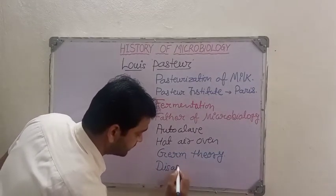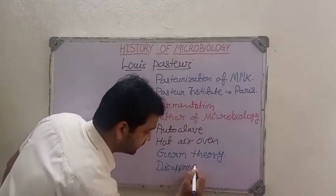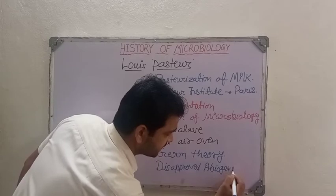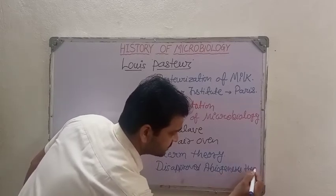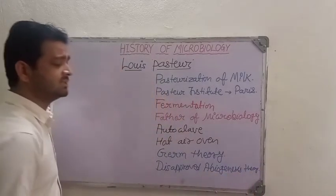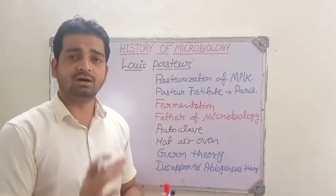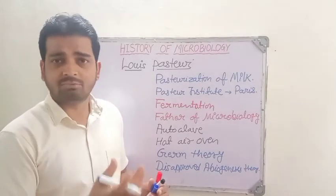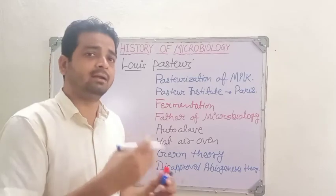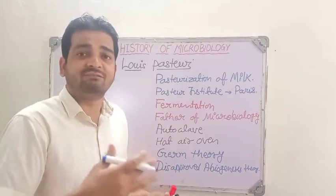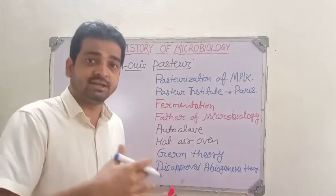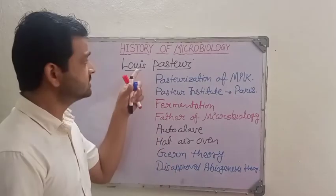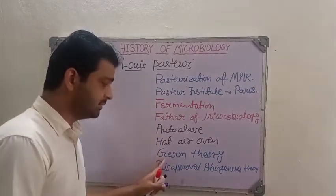At the same time, he disapproved the abiogenesis theory. The abiogenesis theory suggests that many years ago on earth, a lot of gases joined together and formed some types of proteins, and from those proteins cells came — and likewise life got its existence on earth. That abiogenesis theory was disapproved by Sir Louis Pasteur, and instead he gave the germ theory.